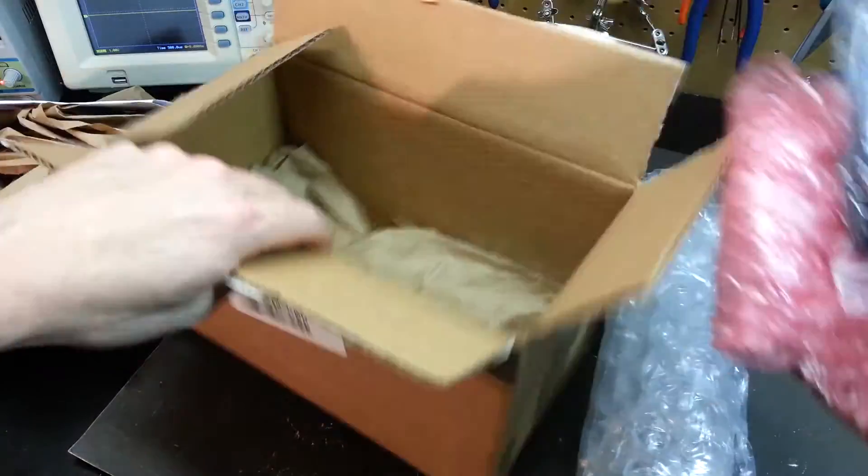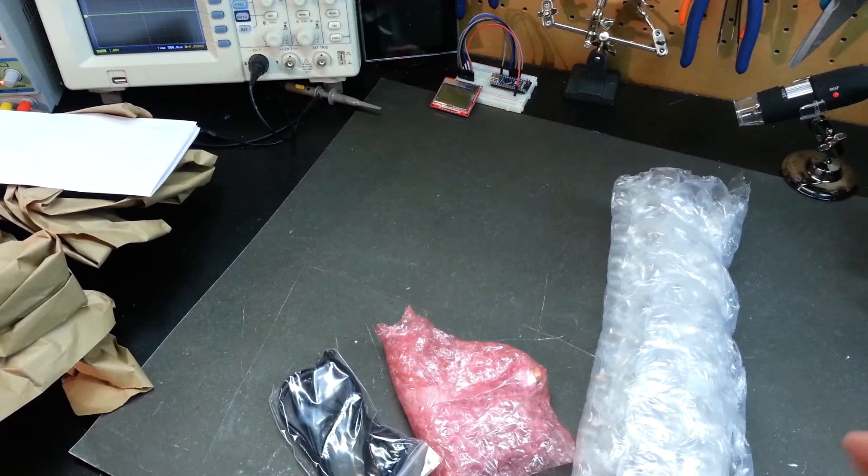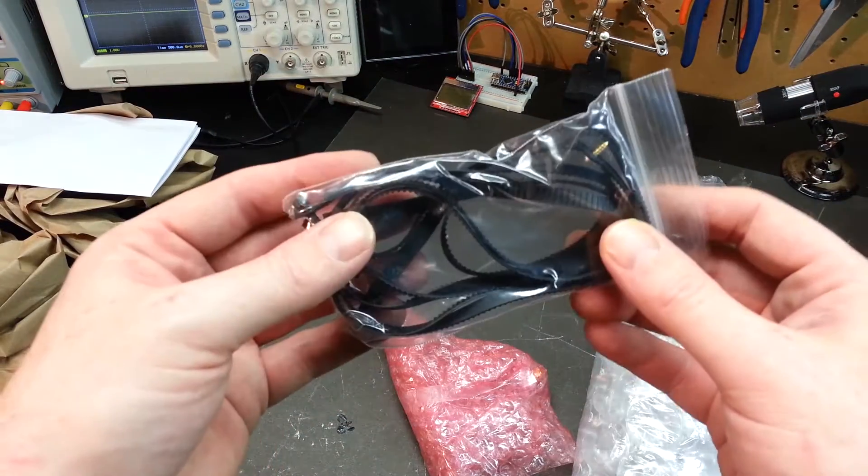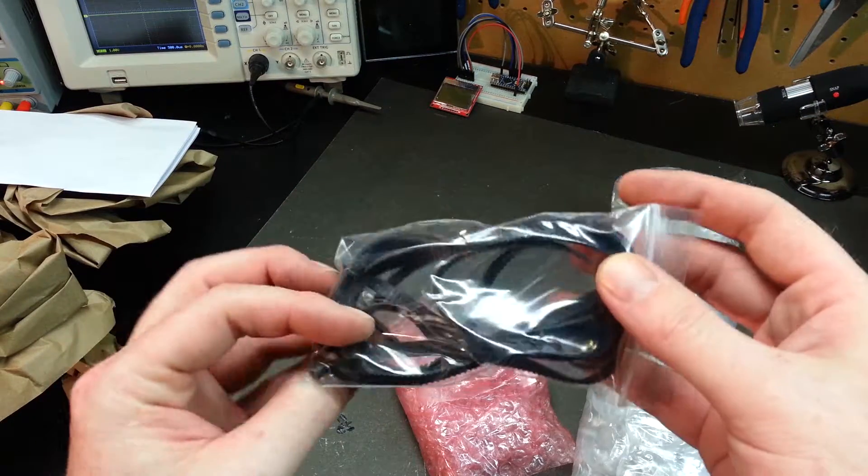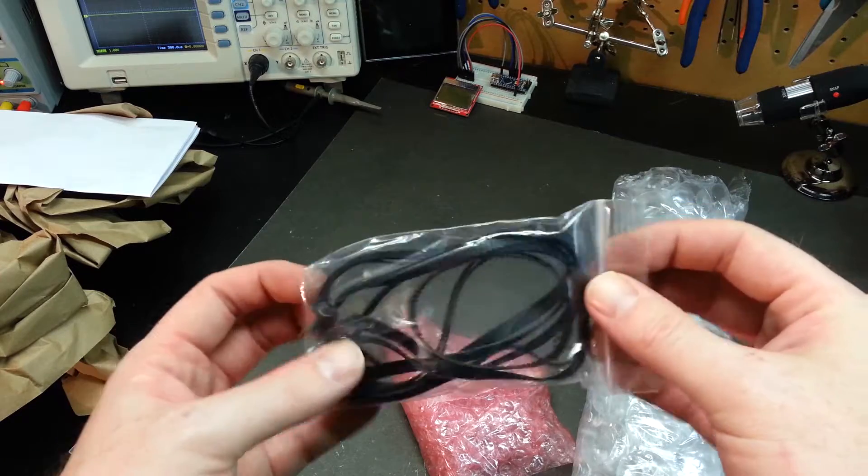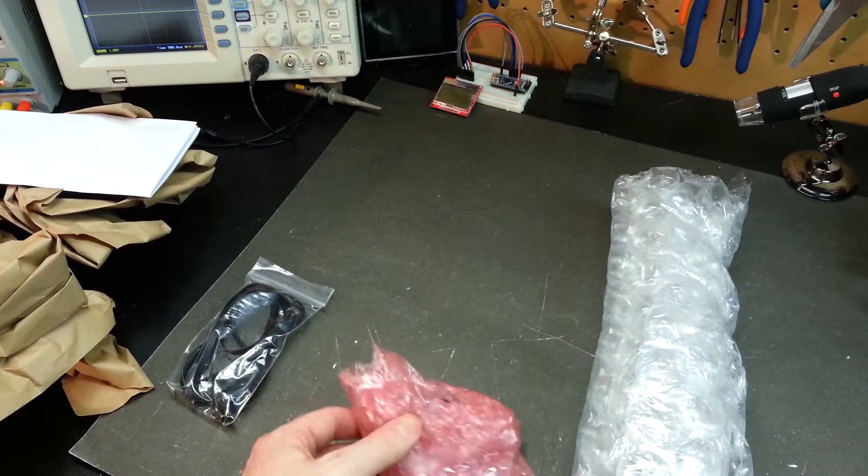Let's get rid of the box here and see what we've got. What I got is a belt kit. I think this was about eight or nine bucks, something like that. This is the piece that I really need.